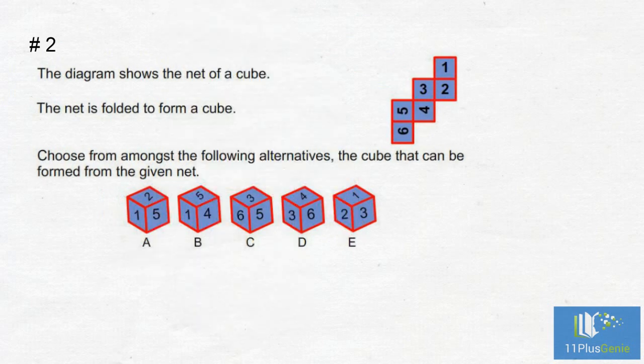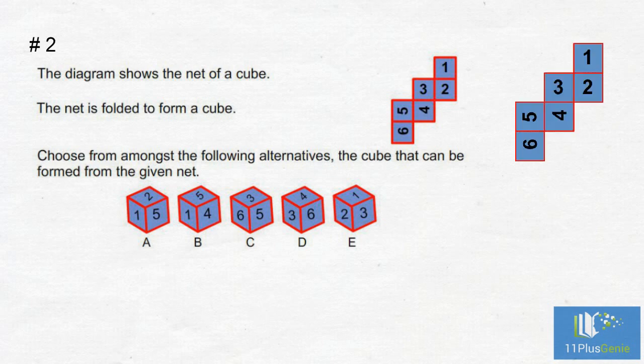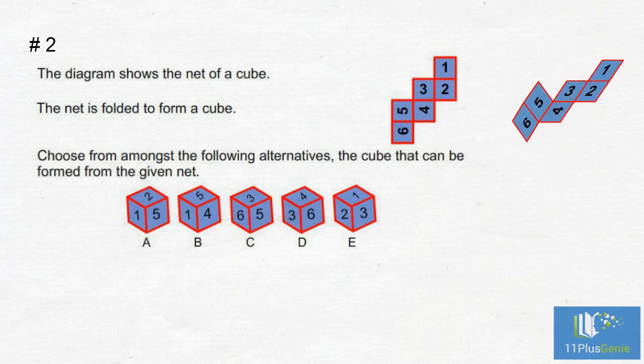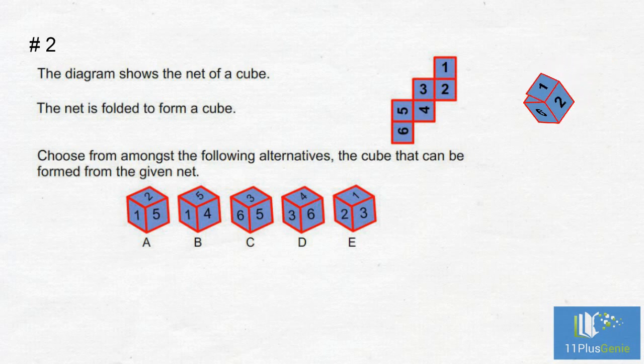Example Number 2: You are given a net of a cube and must find from amongst the answer choices the cube that can be formed from the net. Let's look at an animation on how this cube will be formed. We can identify the numbers that will be opposite each other and start to eliminate the wrong answer choices. We can see that 5 is opposite 2.